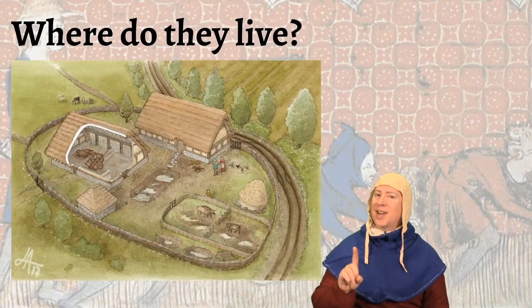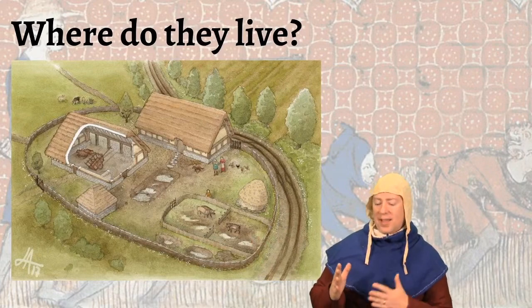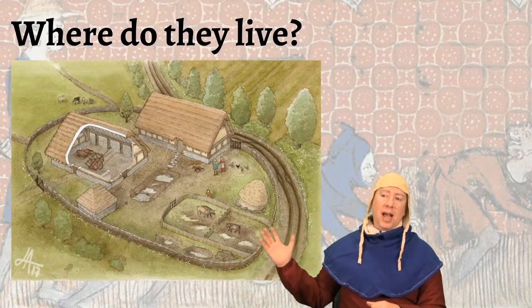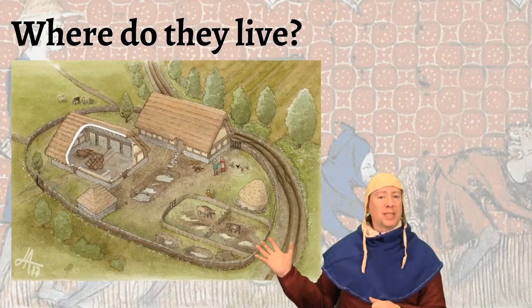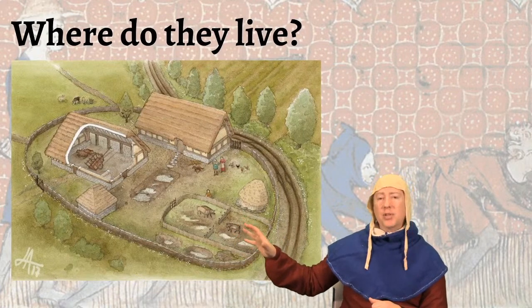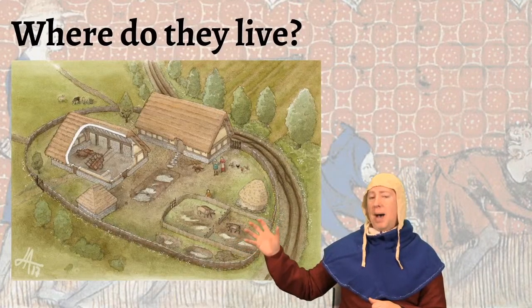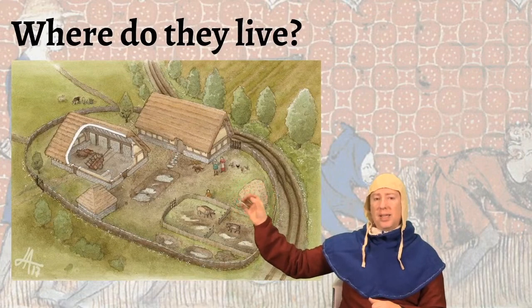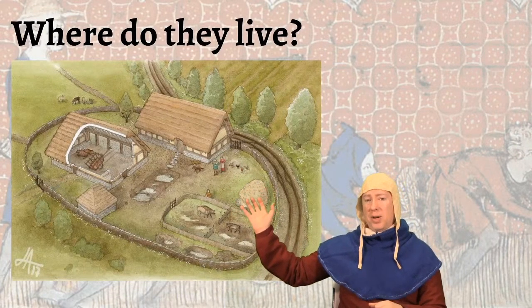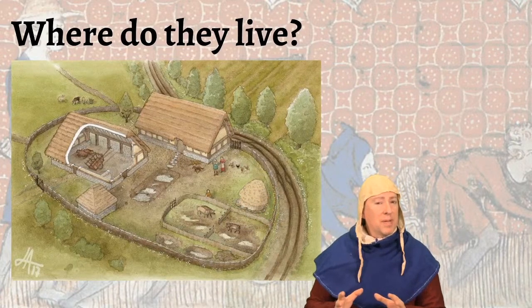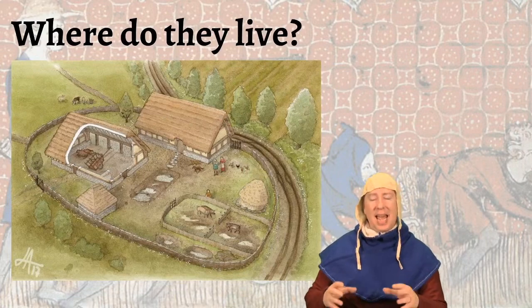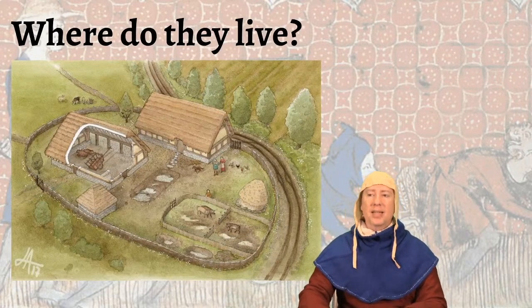The houses they're going to live in are going to be pretty solid because they don't belong to the peasants — they belong to the Lord, and the Lord is thinking of his family and the long term, generations long. He wants the people who live on his domain to be stable and happy, so the houses are going to be maybe not small and comfortable, but substantial and safe. You have a fenced-in area mostly to keep critters out, some livestock, a barn or agricultural storage area, and the home. The home is going to be very simple, usually only one room, where people live, eat, and sleep.